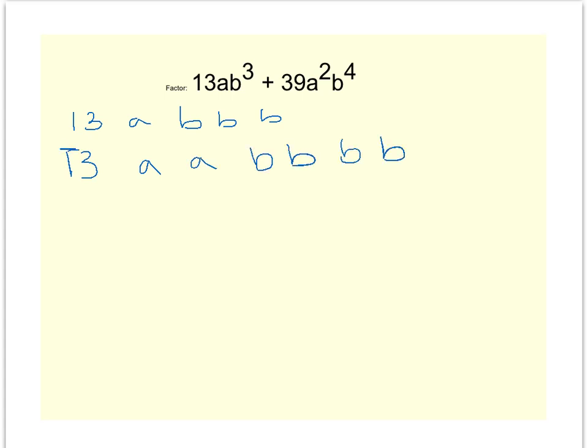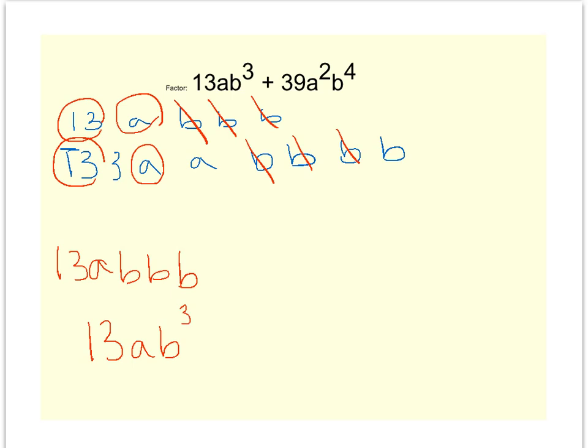So then, let's see, what does it have in common so I can take out a GCF? I've got a 13 in common, so I can take out a 13 for my GCF. I've got an A in common, so I can take out an A for my GCF. How many pairs of B's do I have? I have one pair of B's, a second pair of B's, a third pair of B's. So my GCF is 13AB to the third.